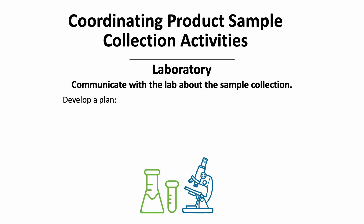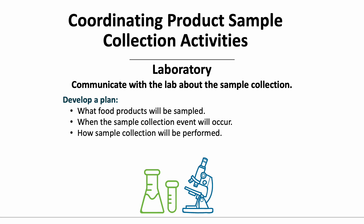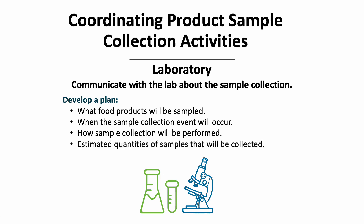Before the food product sampling event, make sure the partnering laboratory is informed. They may need to have specific reagents, supplies, and additional staffing for processing samples. Communicate with the laboratory and develop a plan with your investigating team prior to sample collection about what the sample is that will be collected, when the sample collection event will occur, how sample collection will be performed, and estimated quantities of samples that will be collected.